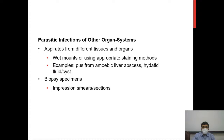Parasitic infections can also occur in other organ systems — from muscles to brain and anywhere else. Depending upon the case, you may look for parasitic structures in aspirates from different tissues, using wet mounts with appropriate staining, or pus from amoebic liver abscess or hydatid fluid cyst. CSF may be used in some cases, and biopsy specimens can be prepared as impression smears or sections, stained and examined.